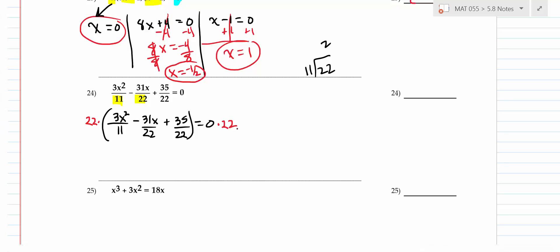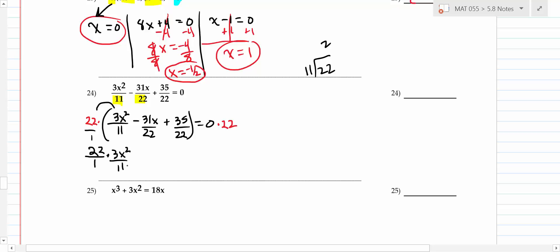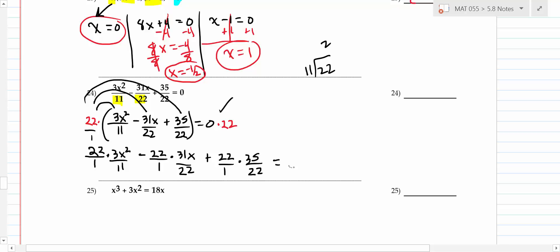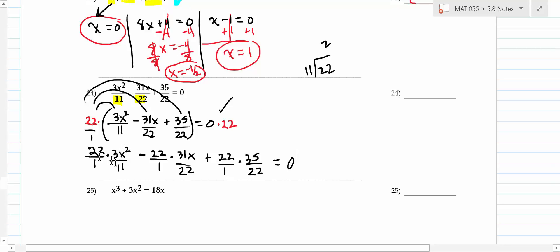I can tell you're getting pretty good with factoring. Now: anytime you have exponents in your equation, think one side equals zero, then factor. Move 18x to the left: x³ + 3x² - 18x = 0. Now factor — you have a third power, second power, first power, so the one with the smallest exponent, x, comes out. That gives x(x² + 3x - 18) = 0.